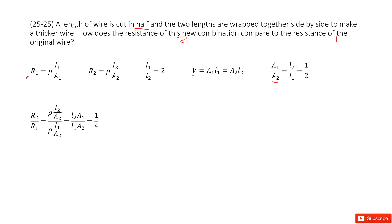So initially, resistance is ρ times L1 over A1. Final resistance R2 equals ρ times L2 over A2. Do you agree? Yes.